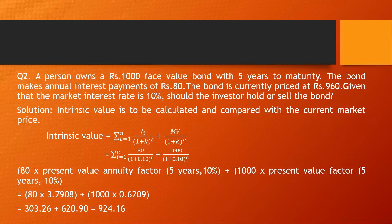To calculate intrinsic value: rupees 80 into the present value annuity factor for 5 years at 10%, plus rupees 1000 into the present value factor for 5 years at 10%. From the tables: 80 × 3.7908 + 1000 × 0.6209, giving an intrinsic value of rupees 924.16. We compare this with the current market price of rupees 960.